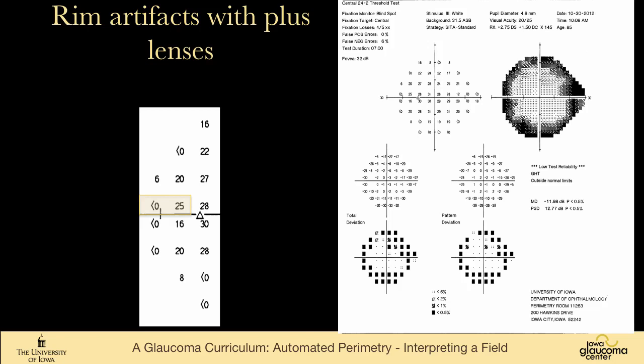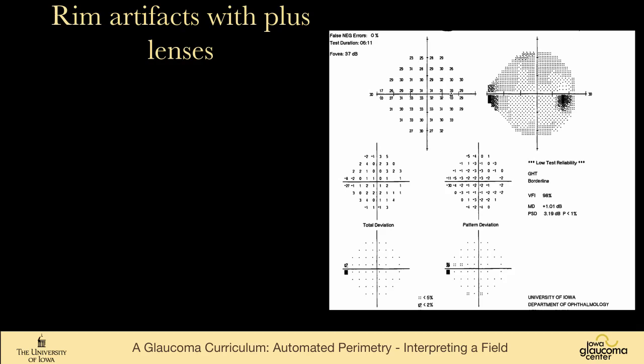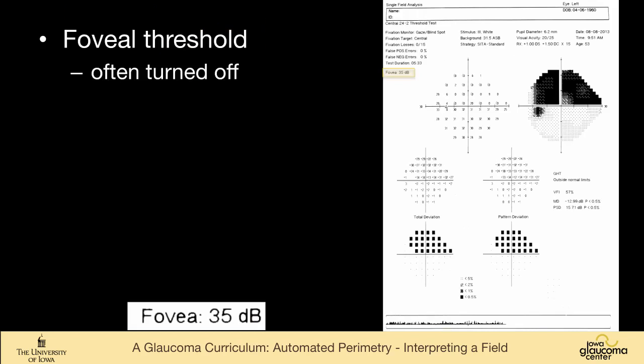I put this with prescription because rim artifacts are more commonly seen in people who have plus lenses. And a rim artifact looks just like this. You can imagine that you're seeing the rim of the correcting lens. Notice this sudden drop-off from 25 decibels to less than zero. As it's black in the very far periphery, it does not follow the nerve fiber layer pattern at all. Usually with plus lenses, it can also be in a patient who's drifting back from the headrest and the perimeter, and so they're farther away than they should be. Here's a more subtle example. You can see it's above and below doesn't follow the nerve fiber layer pattern.